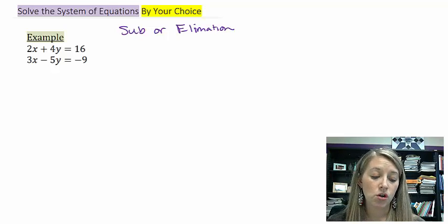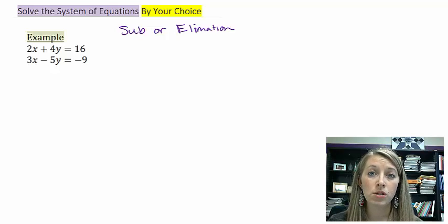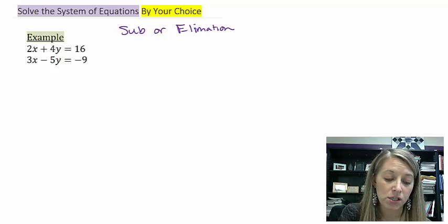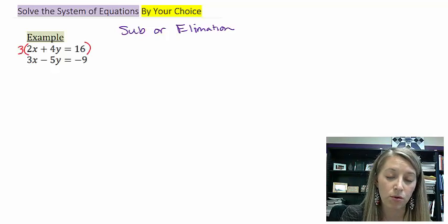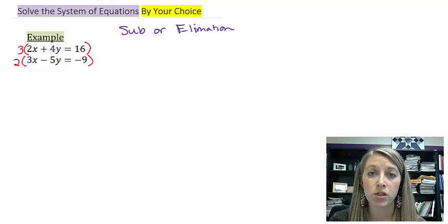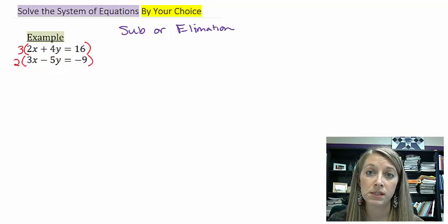Now, I want to make sure that my X's come up to be the exact same number with opposite signs. So if they don't have any factors in common, I'm just going to multiply them by the opposite factors. I see my bottom equation has a 3, so I'm going to multiply my top equation by 3. I see my top equation has 2, so I'm going to multiply the bottom equation by 2. It's basically the same thing as trying to come up with a common denominator.